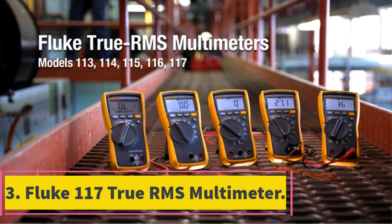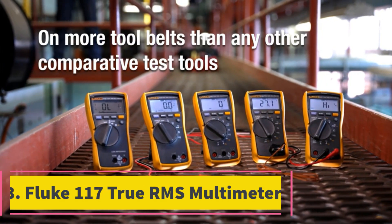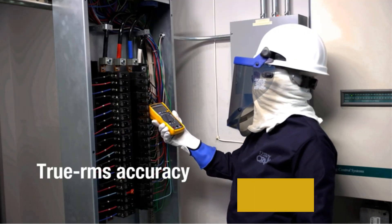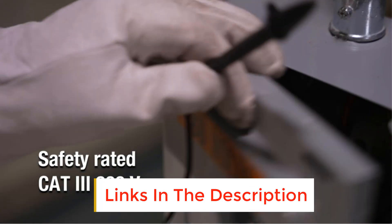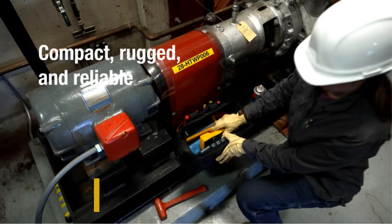Number 3. Fluke 117 True RMS Multimeter. With a Category 3 600V safety rate, the Fluke 117 True RMS Multimeter lives up to tough tasks electricians face each day. Stay safe from surges at 6 kV peak per IEC.